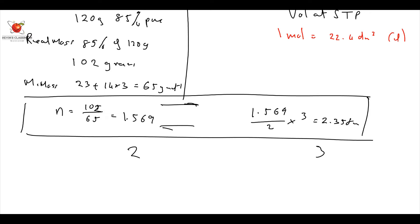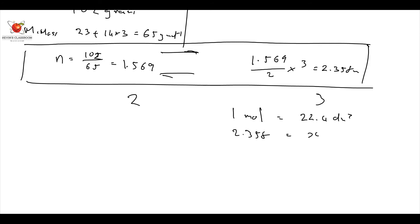So now I can say, I always like to say to students, please write down 1 mole equals 22.4 decimeters cubed. And I know that is 2.358 must be equal to X. That's what I need to work out. So now what do I do? I cross multiply over here.